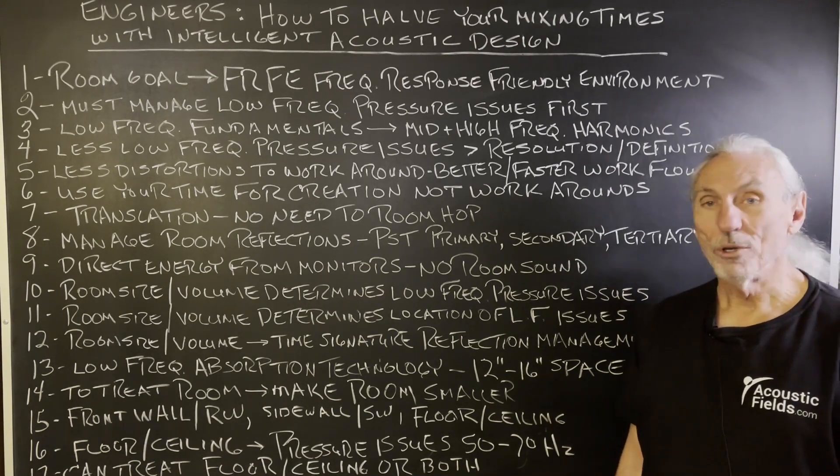Engineers: how to half your mixing time with intelligent acoustic design. Start with the low frequency pressure problems first, work your way up to middle frequency issues and then high frequency issues. Select a room size that will allow you to give up 12 to 16 inches of space along the walls to treat without producing a new room size that causes more problems.